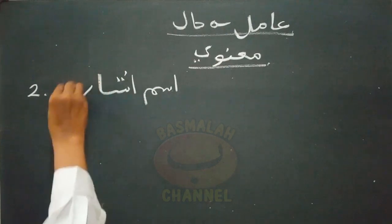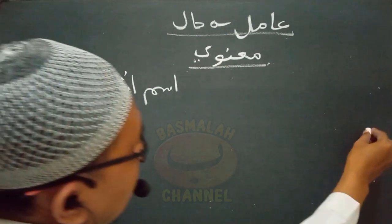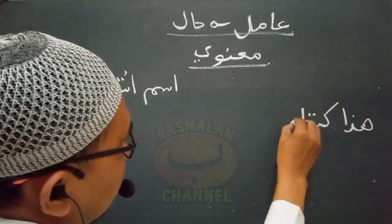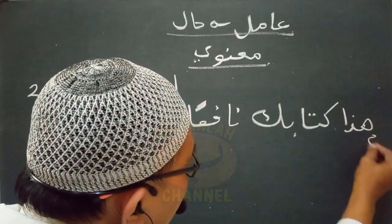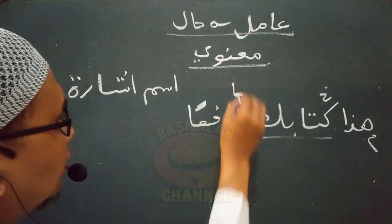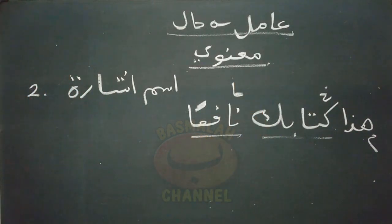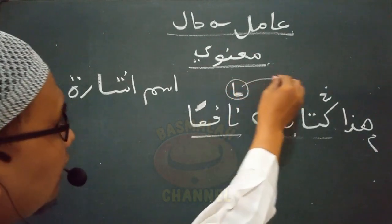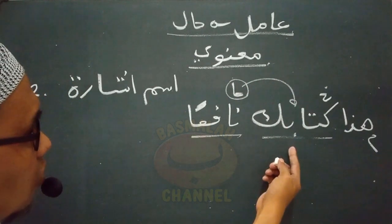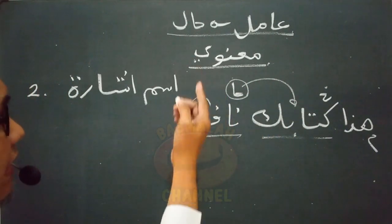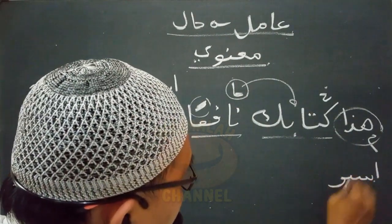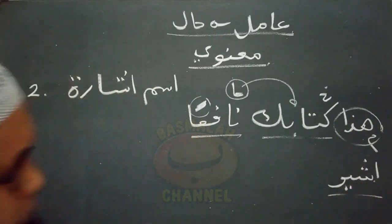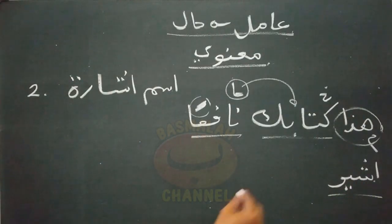Selanjutnya bentuk yang kedua yaitu berupa isim isyaroh. Contohnya 'hadha kitabuka nafi'an' - ini kitabmu dalam keadaan bermanfaat. Lafat nafi'an adalah hal yang menjelaskan keadaan daripada lafat kitabuka sebagai sohibul halnya, wajib nasob. Yang menasobkan adalah lafat hadha yang merupakan isim isyaroh. Takdiran makna daripada lafat hadha di sini adalah ushiru - memberi petunjuk.